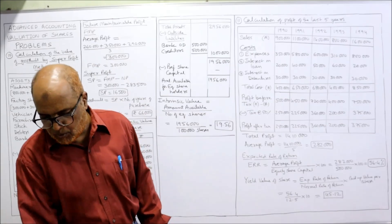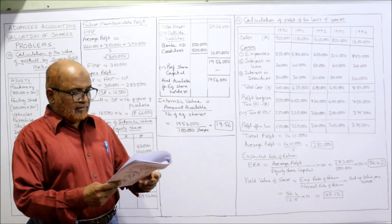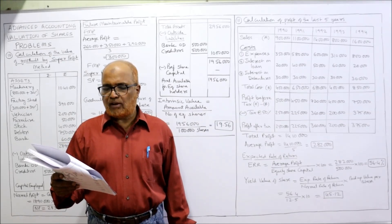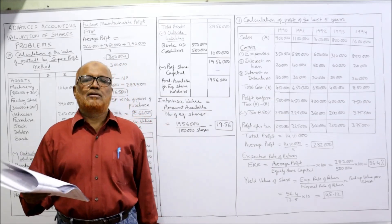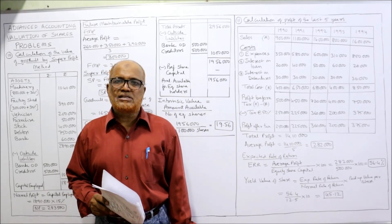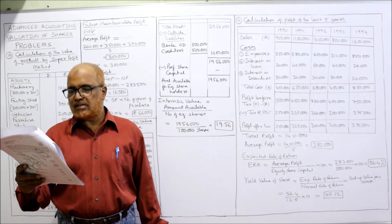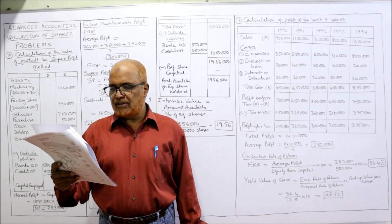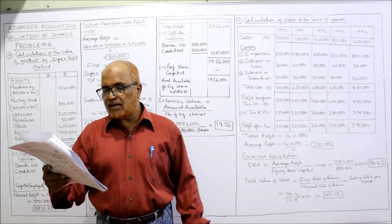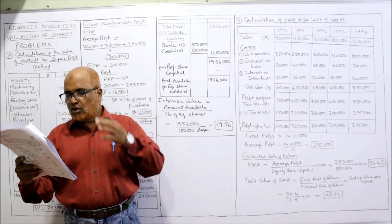Now the 11th problem. From the balance sheet of J Adams Company Limited as on 31st December 1994, compute the value of its equity share by the capitalization of earnings method — that is, yield basis, not intrinsic value. Liabilities: share capital, reserves and surplus, long-term borrowings (10% debentures 3 lakh), current liability 2 lakh 50 thousand — total liabilities 12 lakh. Assets: fixed tangible assets 6 lakh, preliminary expenses 25 thousand (ignore), current assets 5 lakh 75 thousand — total 12 lakh.